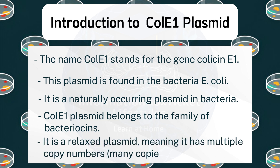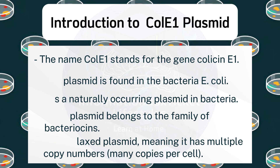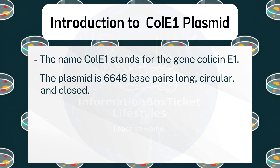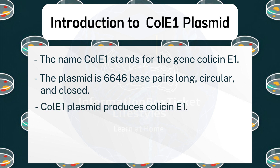It is a relaxed plasmid, meaning it has multiple copy numbers — many copies per cell. The plasmid is 6,646 base pairs long, circular, and closed. ColE1 Plasmid produces colicin E1.